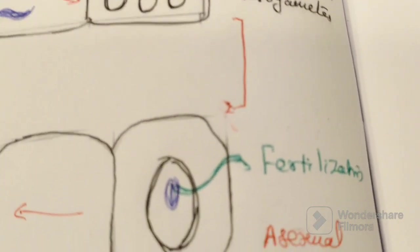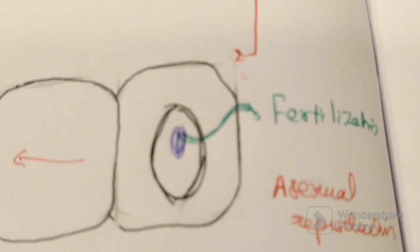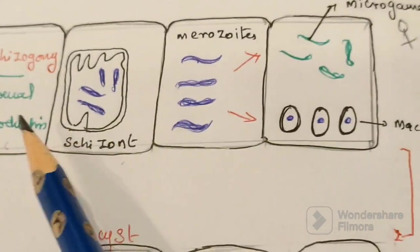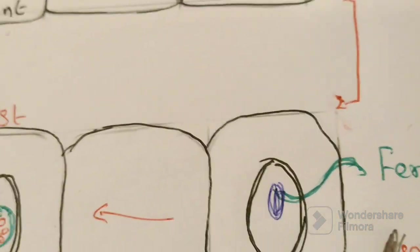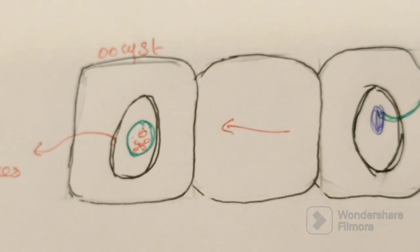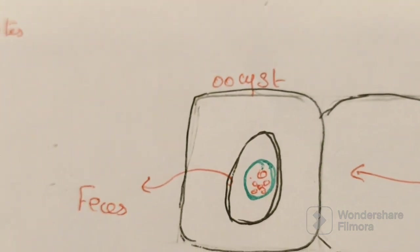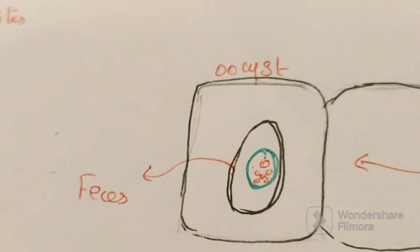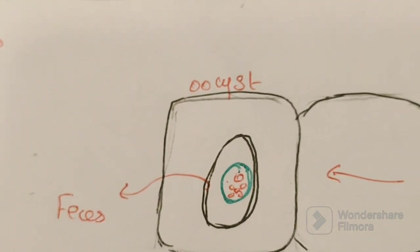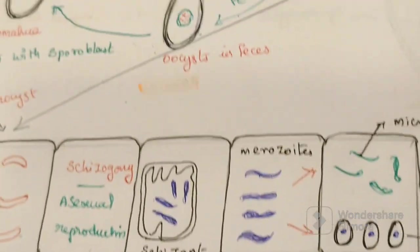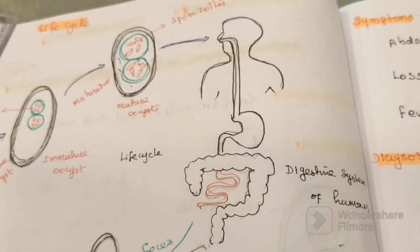Fertilization of the microgamete and macrogamete occurs, and fusion takes place — this is called sexual reproduction. After fertilization, immature oocysts develop and are released out through human fecal material. The total life cycle then repeats again.